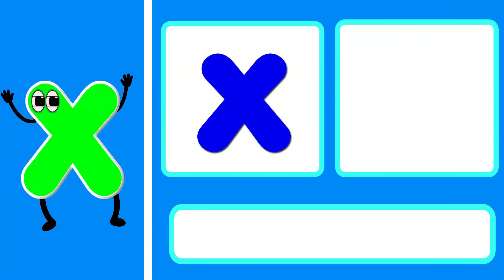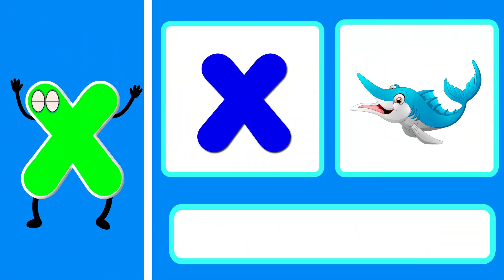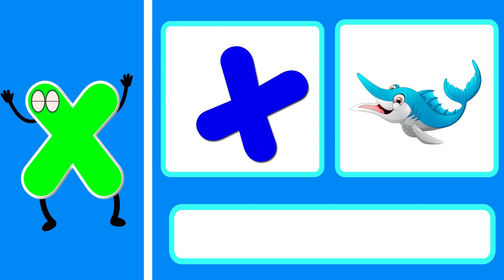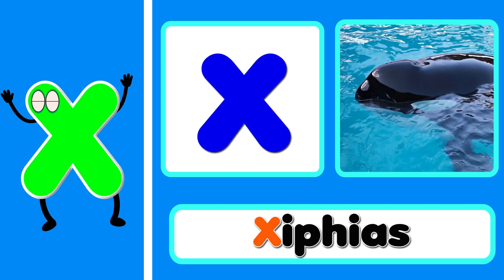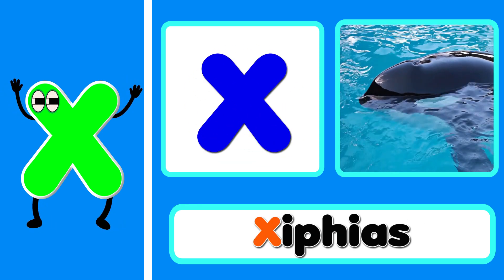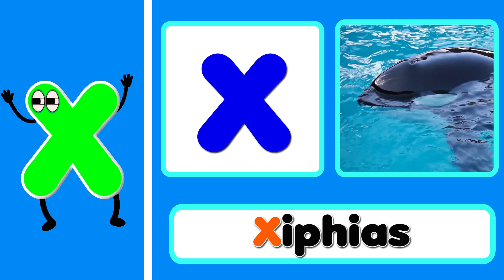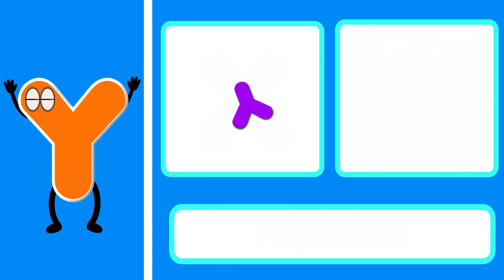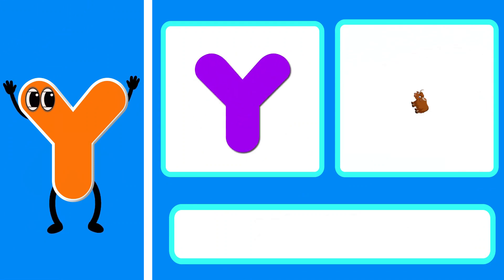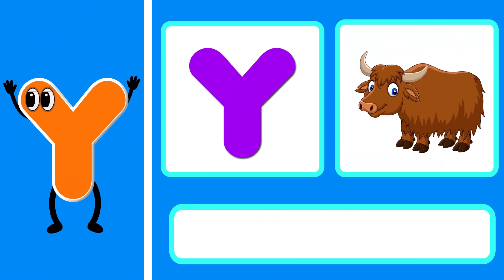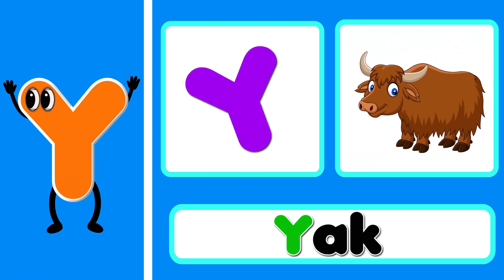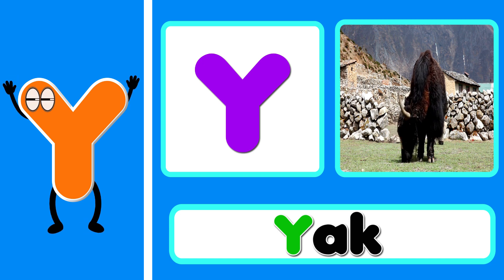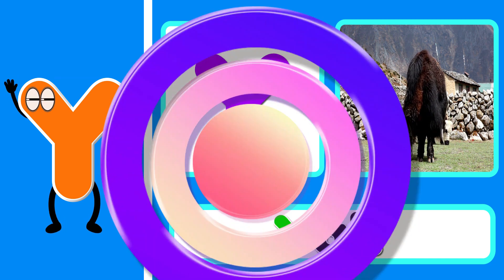X is for Xenops. X, x. Xenops. X is for Xenops. X, x, x. Y is for Yak. Y, y. Yak. Y is for Yak. Y, y, y.